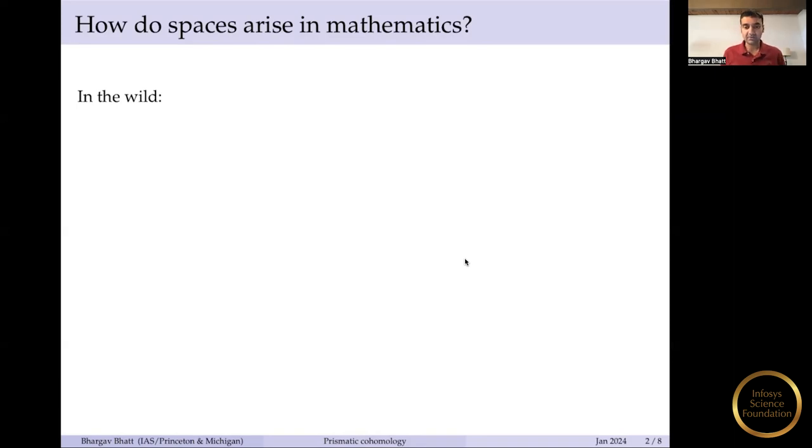So the first way you might encounter a space in mathematics is just in the wild. You could just draw it or you could picture it. Here's an example. It's called the Möbius band and it looks like so. It's very easy to build the space. I've drawn a picture for you, but also you can just do it by hand. You take a cylindrical piece of paper and you try to glue it to itself. But at the end, instead of gluing the two ends in the obvious way, you twist them once. And what you get is a Möbius band and it has some nice properties.